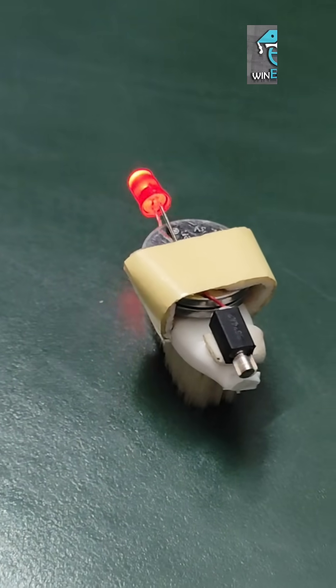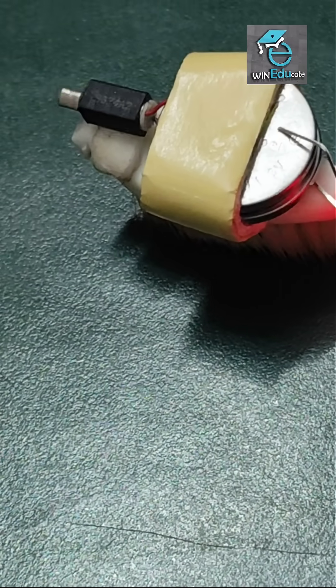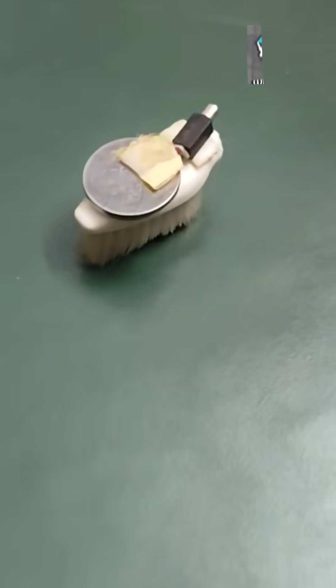What is a bristlebot? A bristlebot is a mini robot made from the head of a toothbrush, a small motor, and a battery. The motor makes the bristles of the toothbrush vibrate, which causes the robot to move around on flat surfaces.